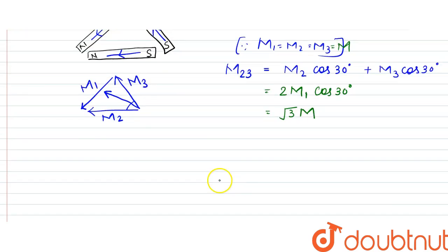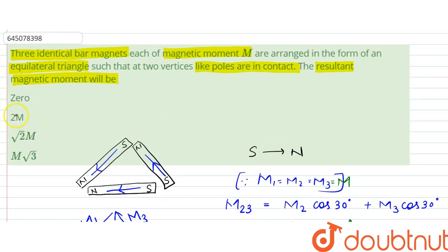Since they are perpendicular, M1 and M2,3, what we could say is that the resultant M_R is equal to root of square of this, that is 3M² plus square of M1, that is M². Since the angle is 90 degrees, cos 90 is 0. So, that is equal to root of 4M², which is equal to 2M. So, the net magnetic or resultant magnetic moment is 2M, that is option B is the correct answer.